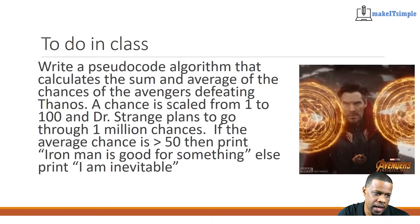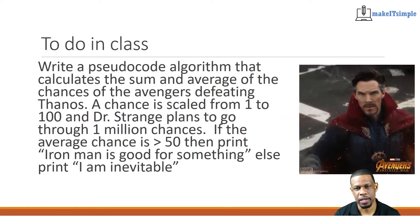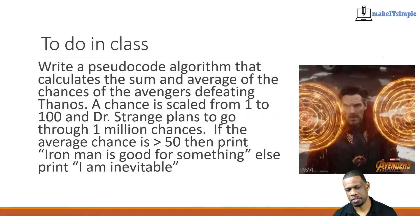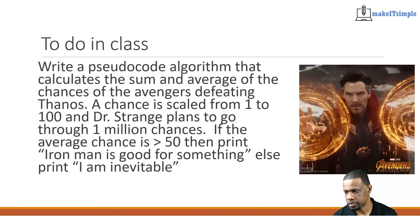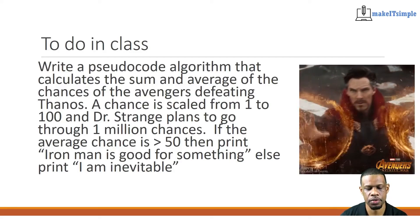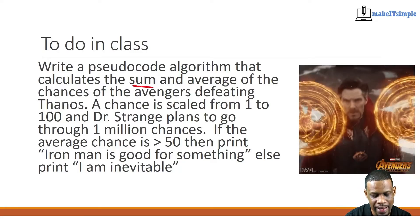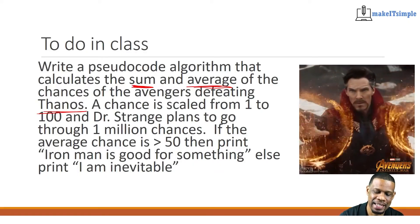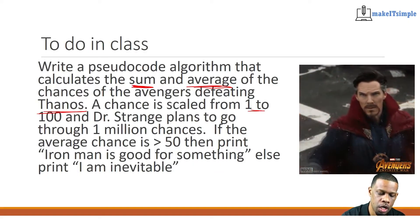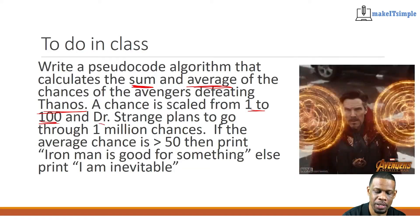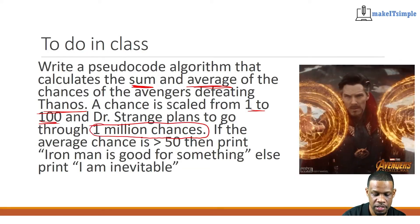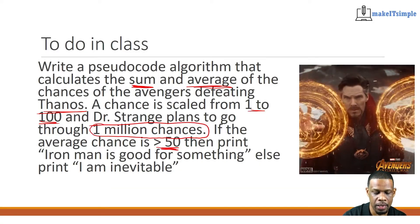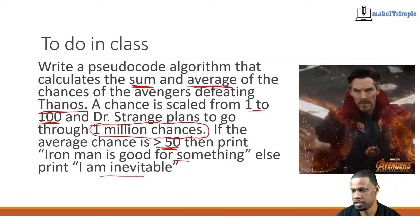This question looks hard, but I'll make it simple for you. It says: write a pseudocode algorithm that calculates the sum and average of the chances of the Avengers defeating Thanos. A chance is scaled from 1 to 100, and Doctor Strange plans to go through 1 million chances. If the average chance is greater than 50, print 'Iron Man is good for something'; else print 'I am inevitable.'